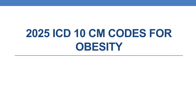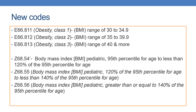Hello everyone. Let us discuss the new obesity codes for the year 2025. The new codes which come under obesity are E66.811, which must be given for Class 1 obesity. Class 1 obesity is defined by a BMI range from 30 to 34.9.